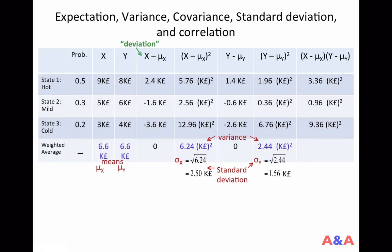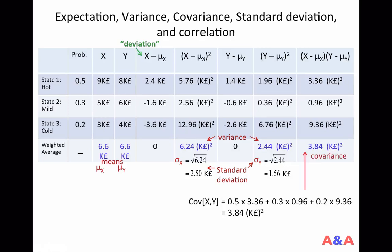Once you compute the product of deviations, to compute covariance of x and y, you should compute the weighted average of these numbers — the product of deviations — using probabilities as weights. So it's probability 0.5 times 3.36 plus probability 0.3 times 0.96 thousand pounds squared, and so on. And the covariance is 3.84 thousand pounds squared.